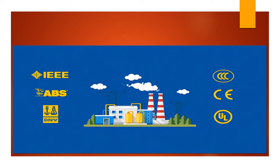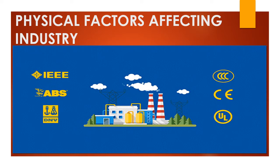Today's topic is the industry and the physical factors affecting it. An industry is a place where raw material is converted into a finished product. We are going to study the different physical factors — such as climate, water bodies, and relief — which directly affect the location of industry.